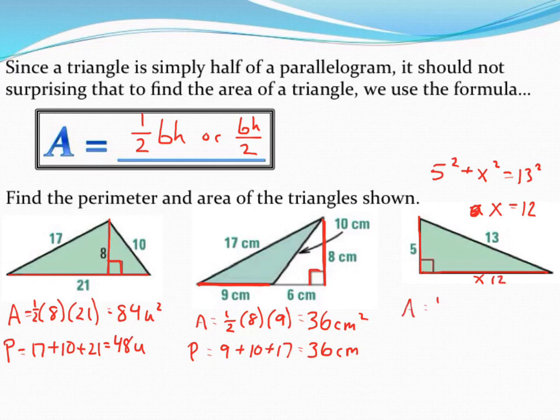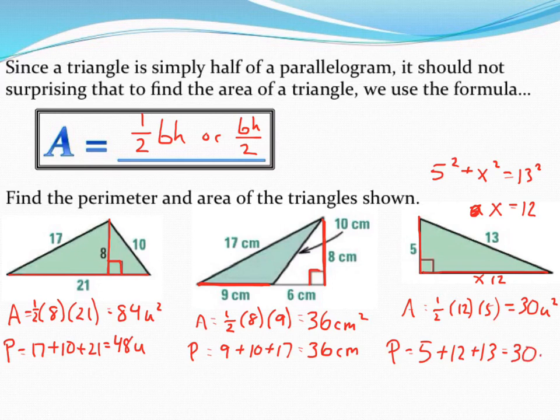So to find my area since we have a triangle, one-half times base times height gets me an area of 30 square units this time because I wasn't given a label. And then perimeter is add up your three sides in a triangle so 5 plus 12 plus 13. Once again weird coincidence we get the same number. Perimeter is 30 units.